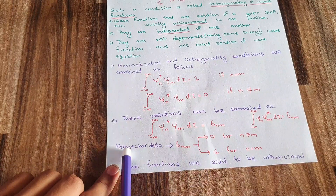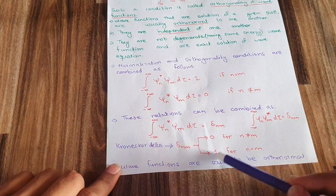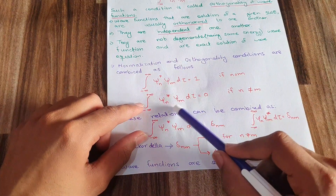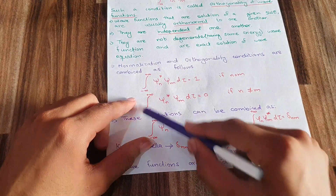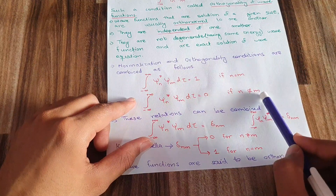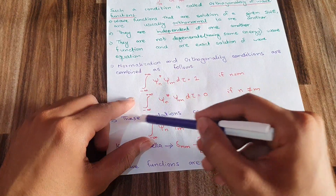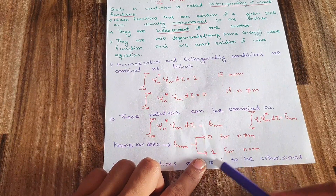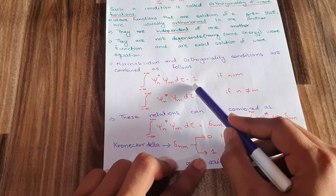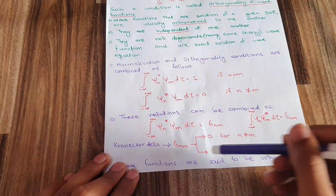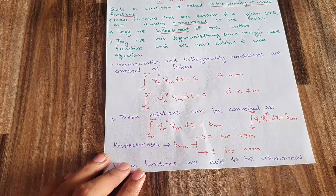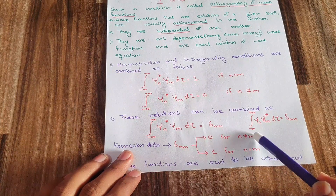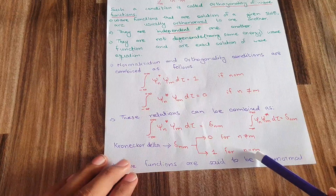The Kronecker delta can have a value of zero or one. If the Kronecker delta is zero, then n is not equal to m, meaning the wave functions are orthogonal to each other. If n equals m, the answer is one, which corresponds to the normalized wave function.